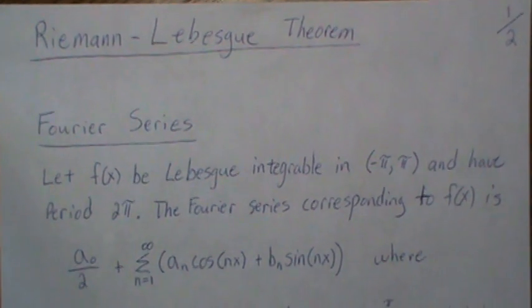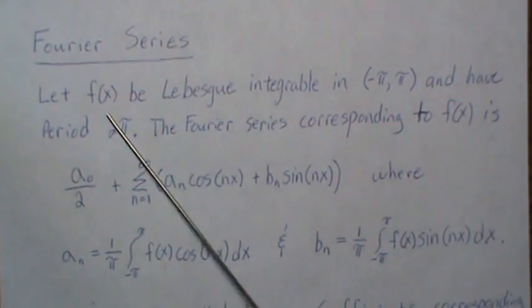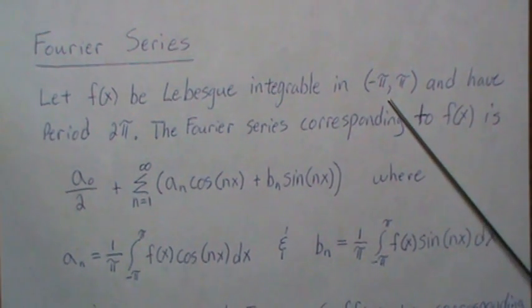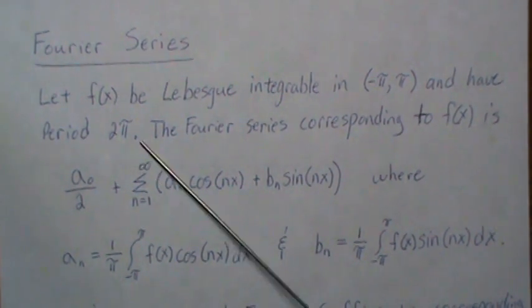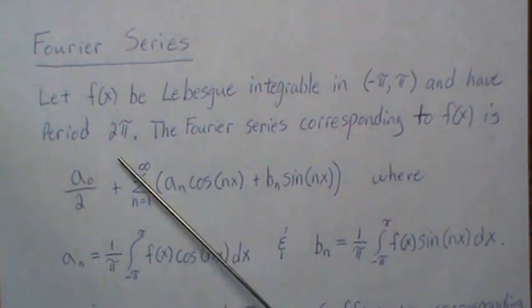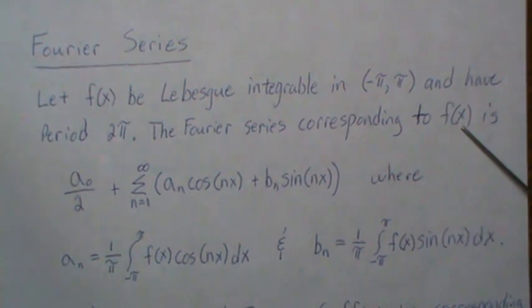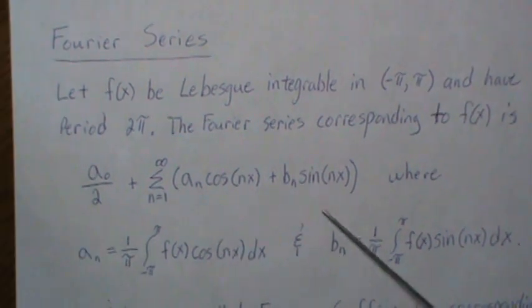So let's look at it. As a reminder what a Fourier series is, we're going to let f(x) be integrable on this range negative pi to pi and have period 2π, and that's our assumption for now. The Fourier series corresponding to f is defined like this: